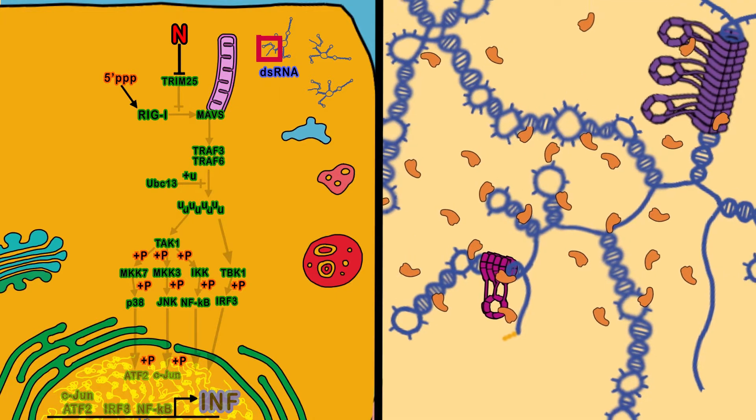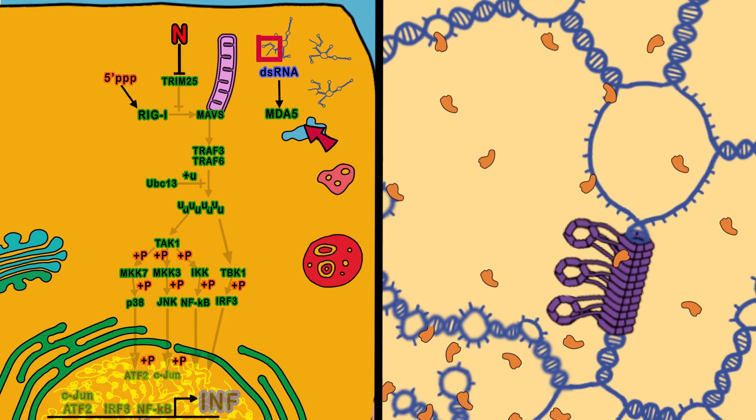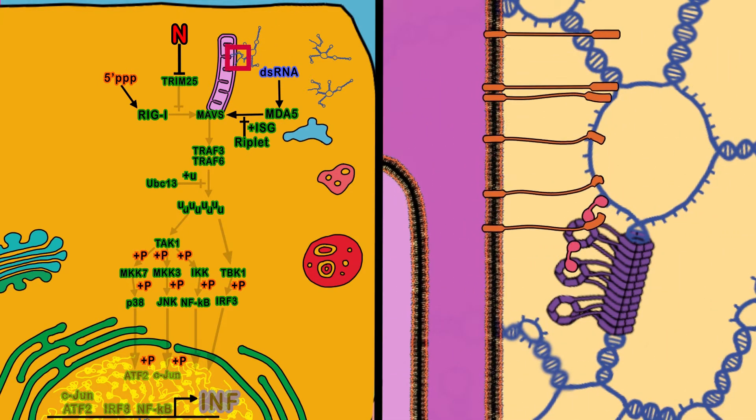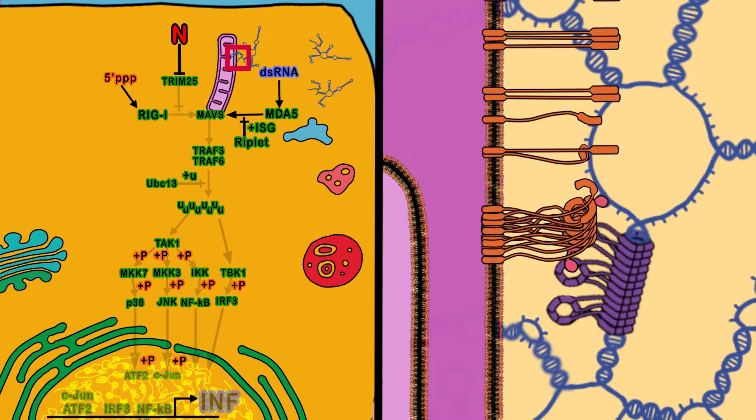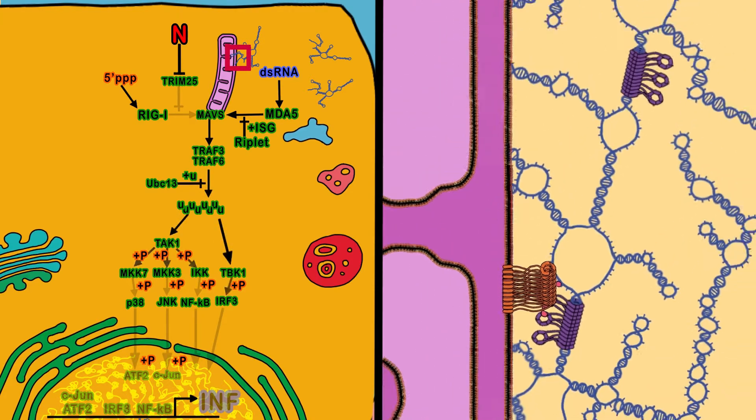But the cell also attacks with MDA5 proteins, which do not use ubiquitin and are not inhibited by nucleocapsids. MDA5 uses another ubiquitin-like protein called ISG-15 to oligomerize and start MAVS polymerization on mitochondrial membranes, activating the TRAF pathways.